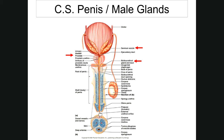The accessory sex glands are glands which secrete most of the liquid portion of semen. Semen is a mixture of sperm and the secretions from these three glands.